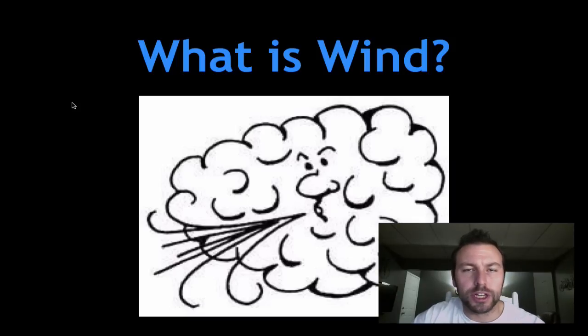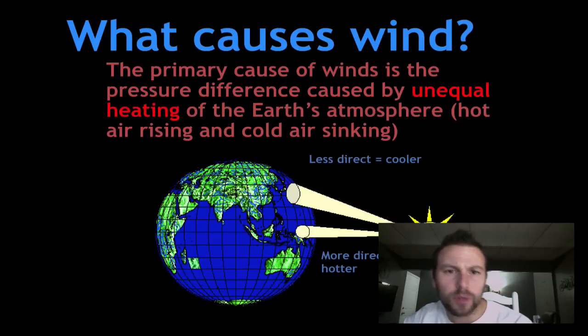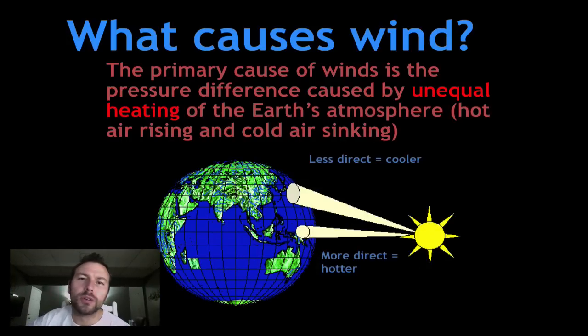Wind is very closely associated with our air pressure systems. The primary cause of winds is due to the unequal heating of Earth's atmosphere, basically causing hot air to rise and cold air to sink. What causes this unequal heating? There are a number of different things. If you remember from when we were discussing land and sea breezes, it had to do with the specific heat of water.